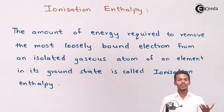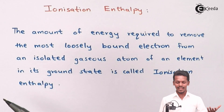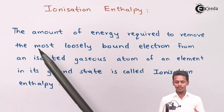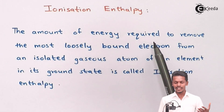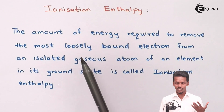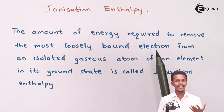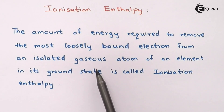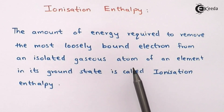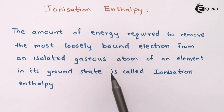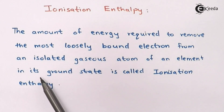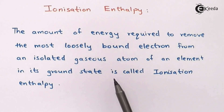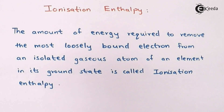The amount of energy required to remove the most loosely bound electron from an isolated gaseous atom of an element in its ground state is called ionization enthalpy.